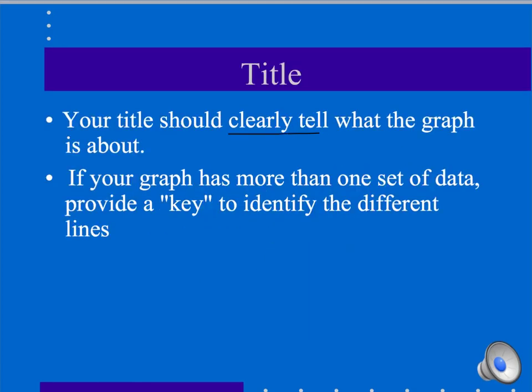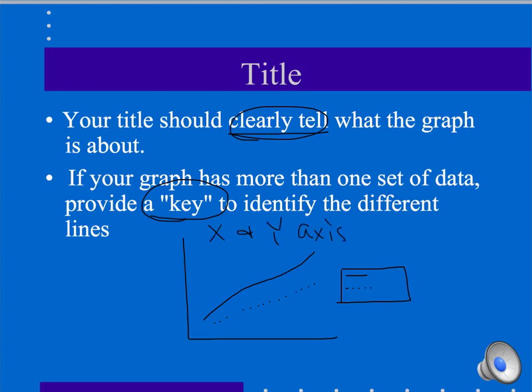The title should tell us clearly what the graph is about. If your graph has more than one set of data, make sure to provide a key. This is when your graph maybe has two lines on it. Maybe one line is solid and one line is dotted. Make sure to include a key on the side that tells us what the dotted line is and what the solid line is. Our title should always be the X and Y axis labels. It should be a combination of this information on this axis and this information on this axis, pulled together to give a clear meaning to the graph.